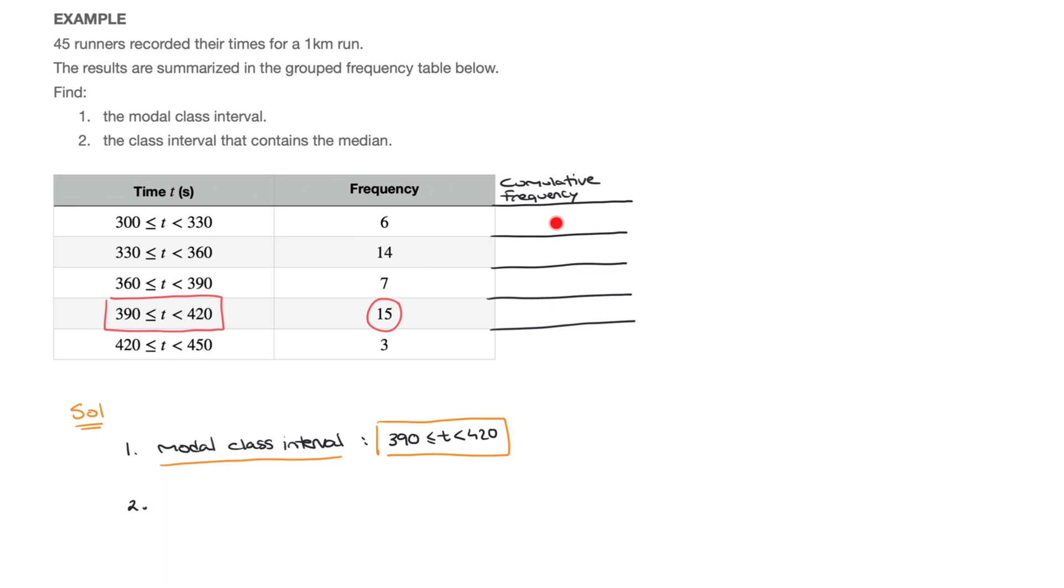Okay, now the first cumulative frequency is equal to the first frequency we have in the table. So that's 6. To find the next cumulative frequency, I add the 6 I just wrote to the next frequency in the table. So that's 6 plus 14, which is 20. I carry on this way. I add this 20 to the next frequency I see. So that's 20 plus 7, which is 27. And I carry on. I add this cumulative frequency of 27 to the 15 I see here. And 27 plus 15 is 42. And last but not least, I add this 42 to the 3 that I have in the next row, which gives us 45.